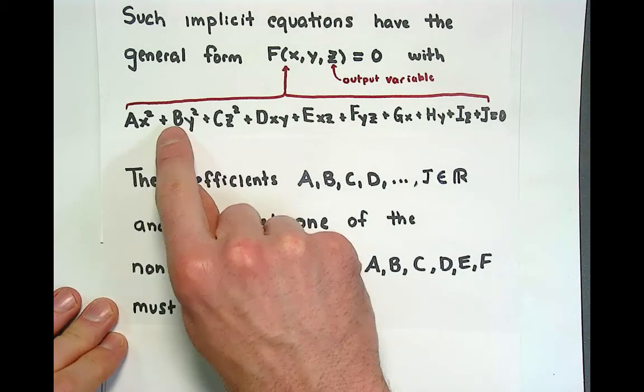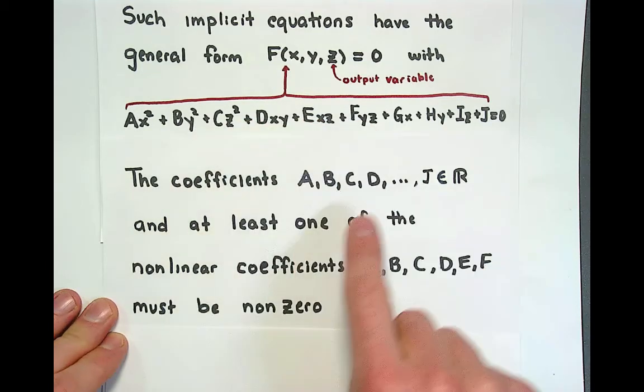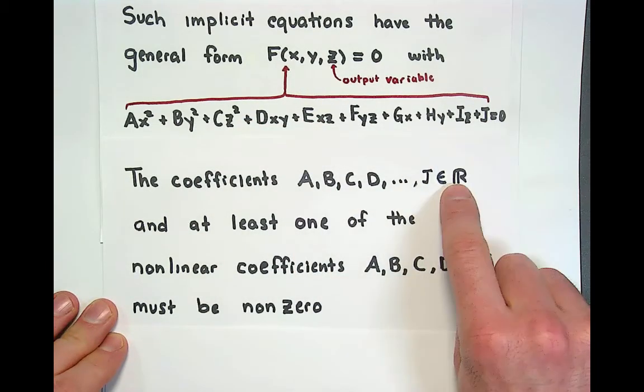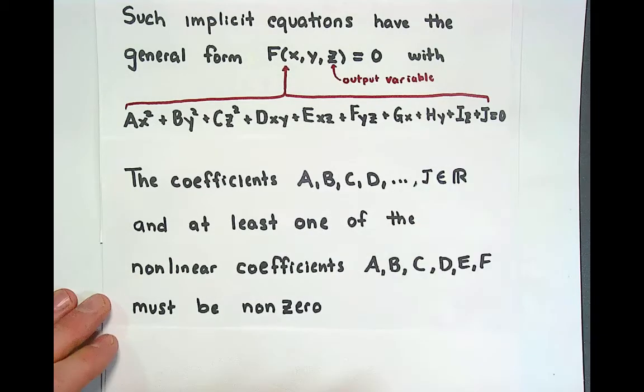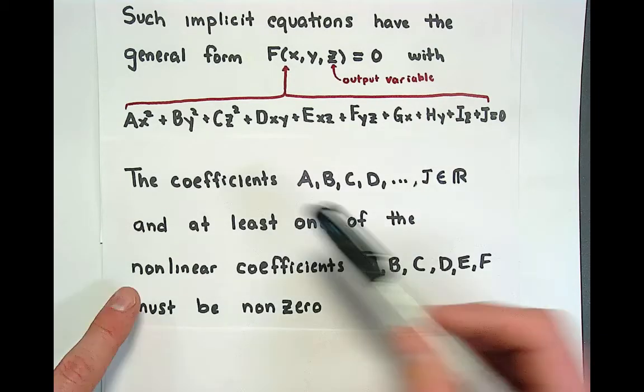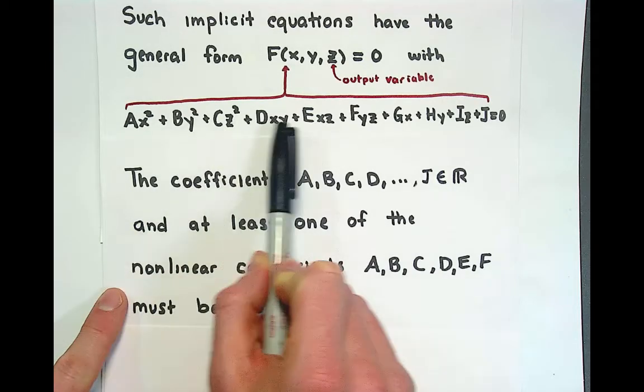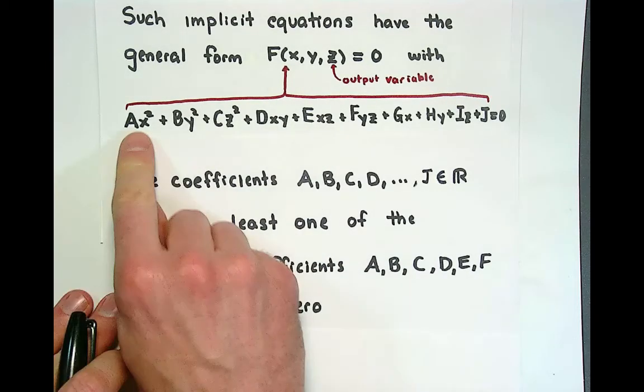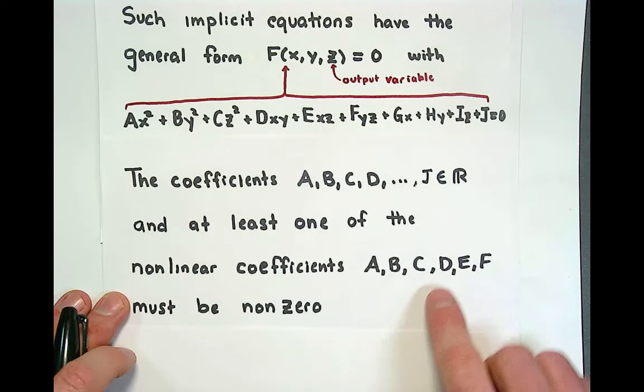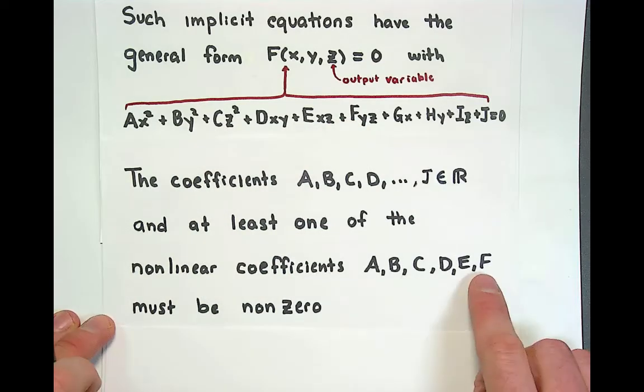The coefficients a, b, c, d, e, f, g all of those coefficients all the way down to j they all must be real numbers and then the claim that we make in quadratic surfaces are that some of the leading coefficients of the non-linear terms, so those are a, b, c, d, e, f, at least one of those should be non-zero.